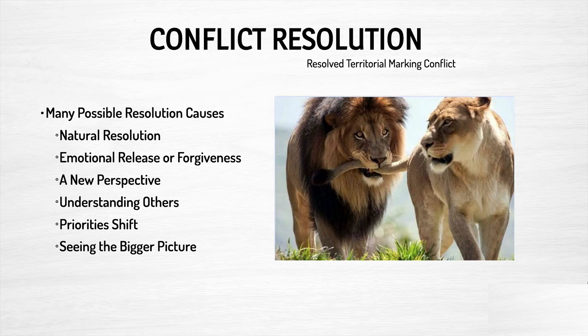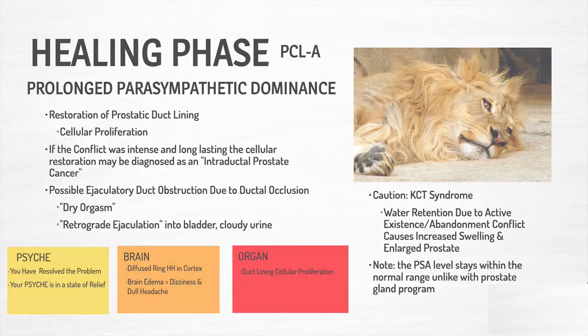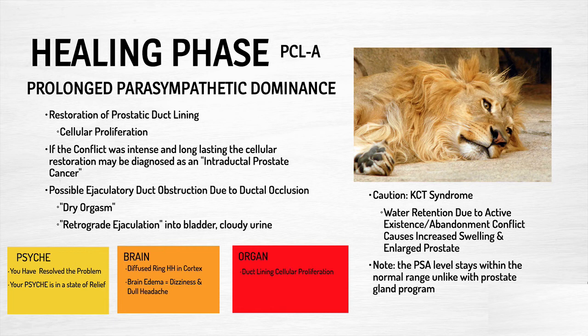We want to get to conflict resolution as soon as possible — resolving this territorial marking conflict. Whatever it has to do with, natural resolution is going to be best: whether the man is allowed to see his children again, whether he clears up whatever's going on with his space being invaded, or resolves the ejaculation issues. Men are going to be going through these conflicts and resolutions fairly frequently, but if it's not ongoing or a continued long-term issue, they won't even be aware of it for the most part.